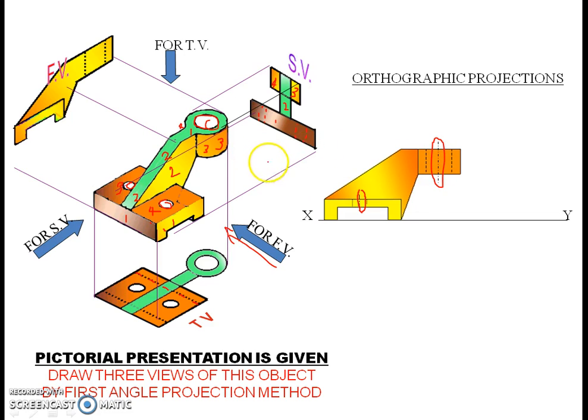This hole cannot be seen from the front view. We are looking from here, we cannot see the hole, that is why it is represented by these dashed lines. In the front view, now the top view, we can clearly see these 3 cylindrical holes: 1, 2, and 3.